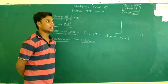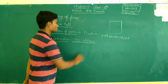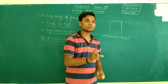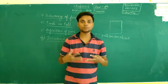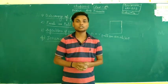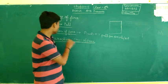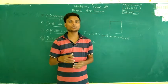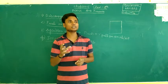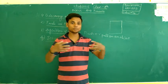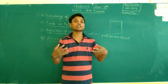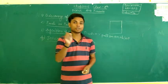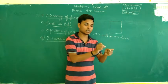Ab bachcho baat karte hain aage ki what is the cause of force - force ka karan kya hai. Force ek object doosre object ke upar force kaise lagata hai, kaise possible hai ki koi object doosre object par force laga sake? To iska jo karan hai wo hai - interaction. Yeh interaction hota kya hai: jab ek vyakti doosre vyakti se milta hai, unke contact mein aata hai, to actually wo ek doosre se interact kar rahe hote hain. Usi tarike se jab ek object doosre object se contact mein aata hai to unke beech interaction hota hai.